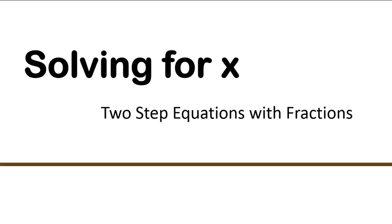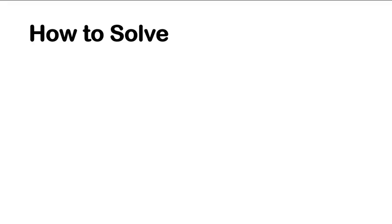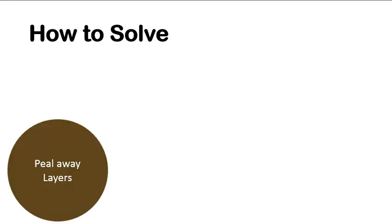We're going to look at all different types so you can be very confident by the time we are finished. So first, the overview of how you solve this: you start by peeling away layers. In any multi-step equation, if it takes more than one step, you have to start farther away from the variable.